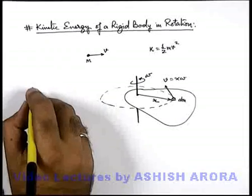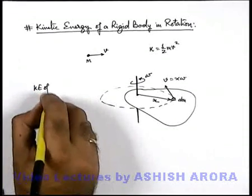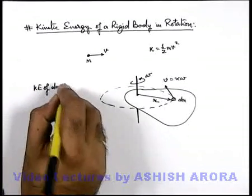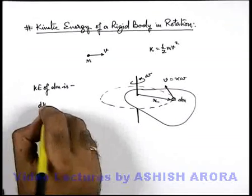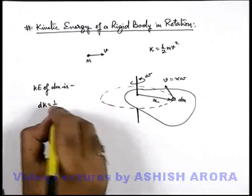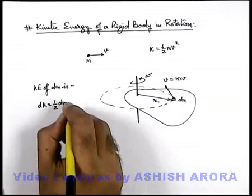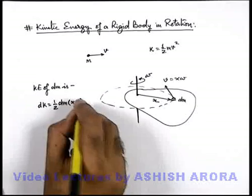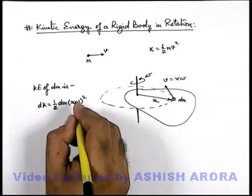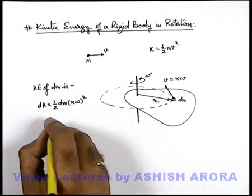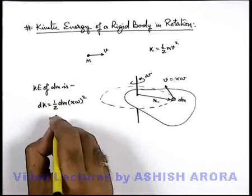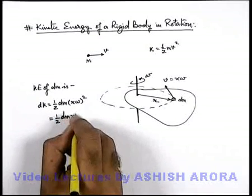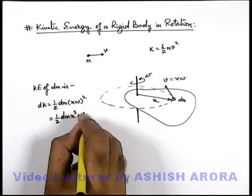So here we can find the kinetic energy of dm. This kinetic energy dK can be given as half dm multiplied by (x·omega) whole square, or on simplifying we get half dm x squared omega squared.